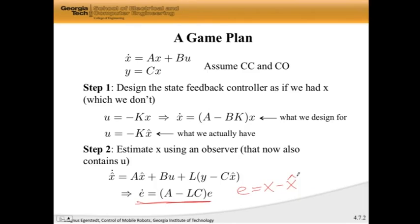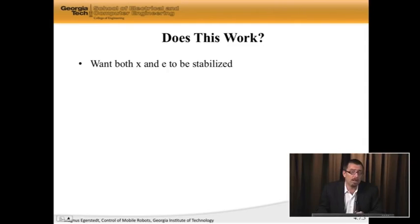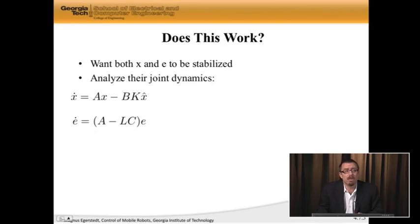Now, let's see if this game plan is any good. What do we want this system to do? We want to drive x to zero because we're stabilizing it, and we want to drive e to zero because we want the estimate to be good. So what I need to do is analyze the joint dynamics together.